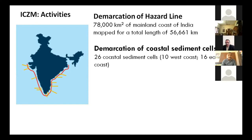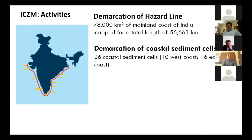The second important exercise was the demarcation of coastal sediment cells. The study revealed 26 sediment cells — 10 on the west coast and 16 on the east coast — further divided into primary cells, secondary cells, and small management units. These sediment cell boundaries formed the basic framework from which the coastal stretches for ICZMP development were planned.